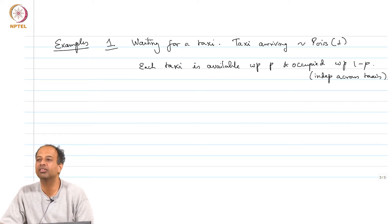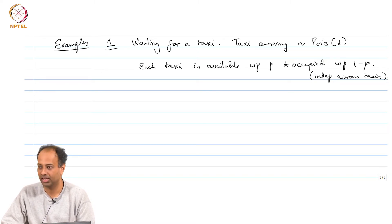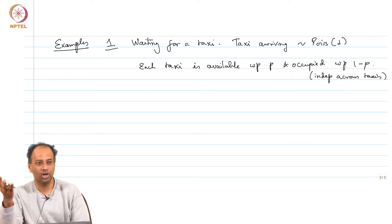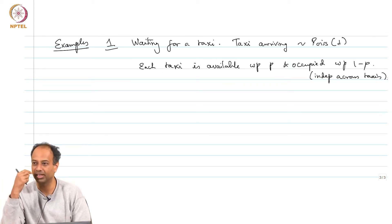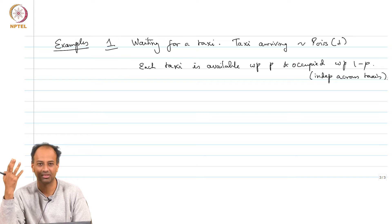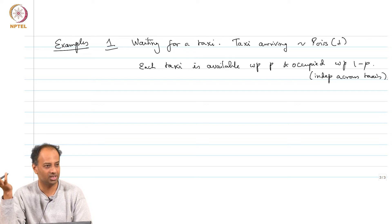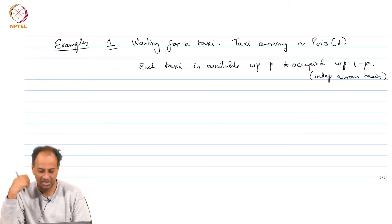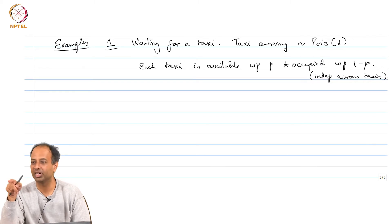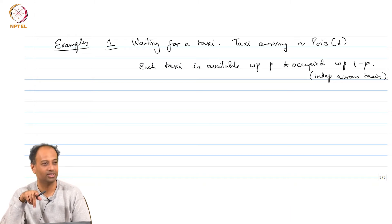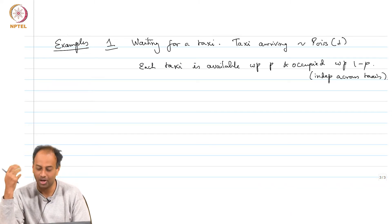I am waiting for a taxi; they are coming by according to a Poisson process. So the time until I see a taxi is an exponentially distributed random variable with parameter lambda, except there is a catch: the taxi that comes first may already be occupied. I want a taxi which is not occupied. So the question is: how long do you wait to actually find a taxi which is available?